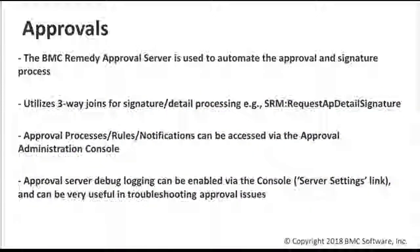For approvals, here's some brief high-level information. The approval server is used for the process, and in SRM we've got a three-way join form that is utilized on the SRM request form. That's the approvals table, and that information is populated in request details as well. The form name is Request App Detail Signature. The approval administration console can be used to see all the rules, modify any rules, create your own, create notifications, create signature escalations for still-pending, or whatever other type of rules and notifications you may need.